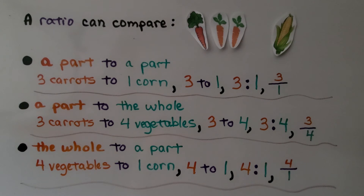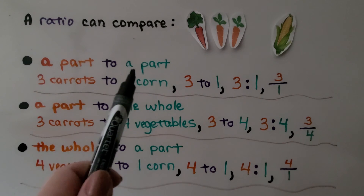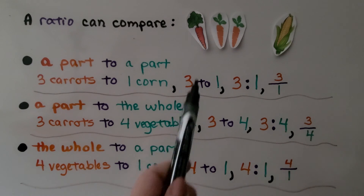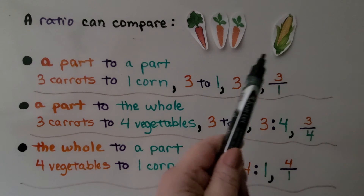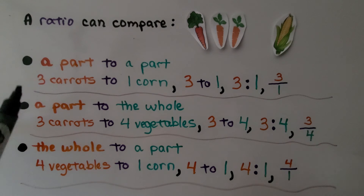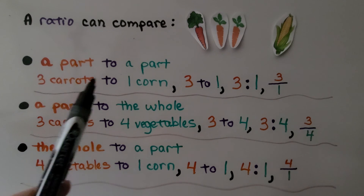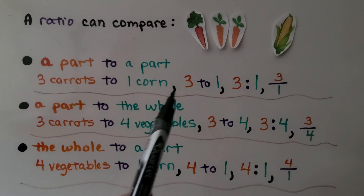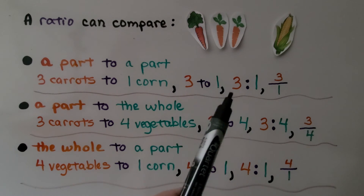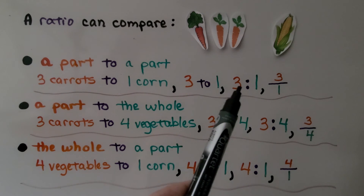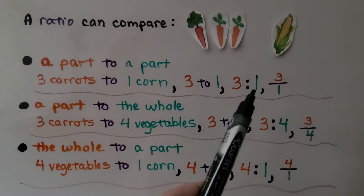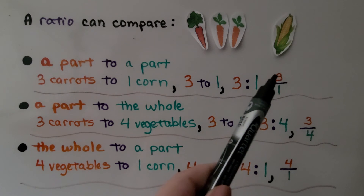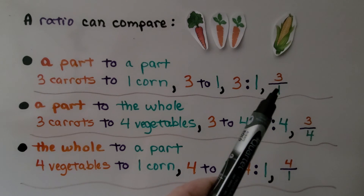A ratio can compare a part to a part. We have three carrots and one ear of corn. A part-to-part ratio would be three carrots to one corn — written as three to one, with a colon as 3:1, or as a fraction, three over one.